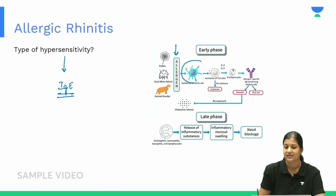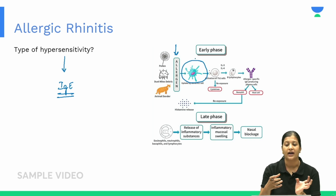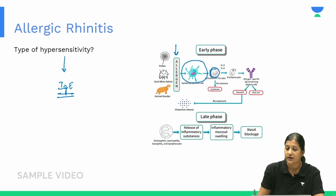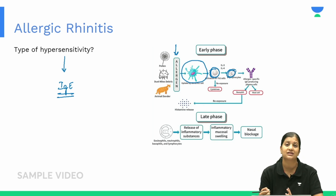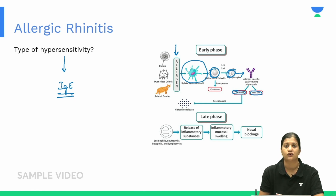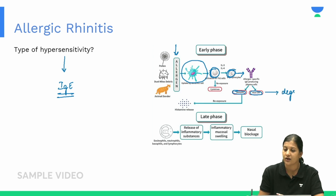The dendritic cells present the allergen to T cells, which proliferate into Th1 and Th2 cells. The Th2 cells release interleukins that stimulate B cells. These B cells ultimately produce immunoglobulin, which sits on mast cells and basophils, causing degranulation.